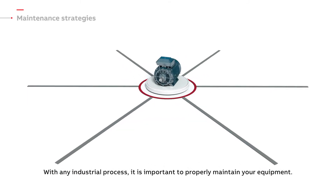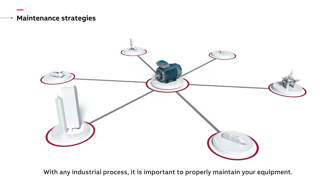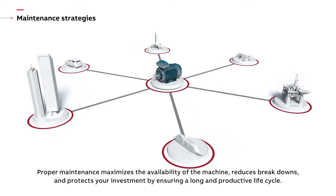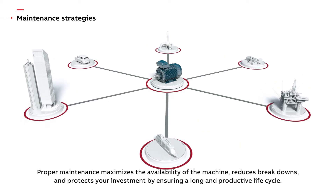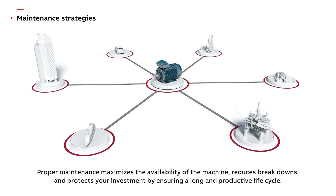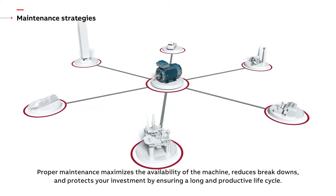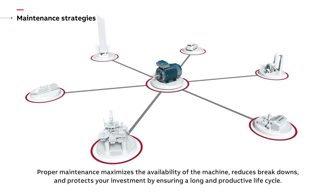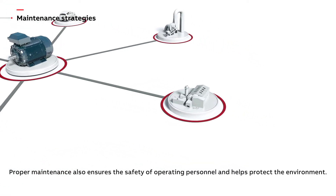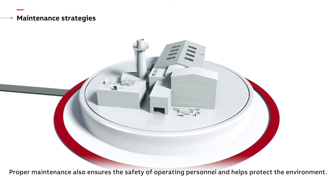With any industrial process it is important to properly maintain your equipment. Proper maintenance maximizes the availability of the machine, reduces breakdowns and protects your investment by ensuring a long and productive life cycle. Proper maintenance also ensures the safety of operating personnel and helps protect the environment.